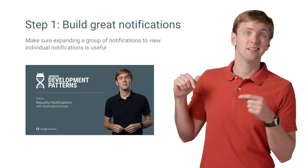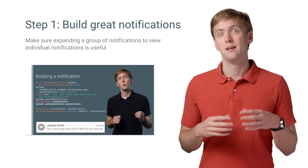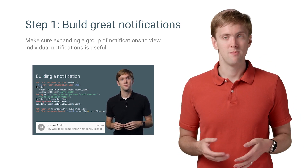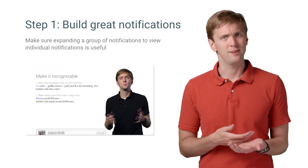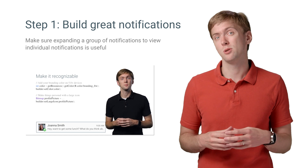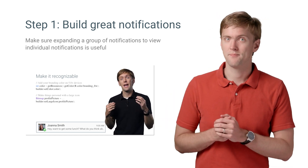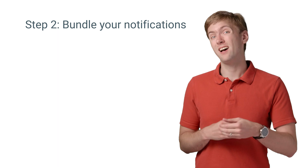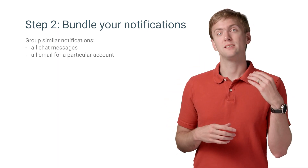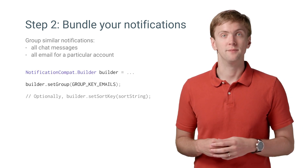I've talked about building a great notification with NotificationCompat. So let's assume you've already built great individual notifications. If users aren't getting any benefit, such as more information or actions, out of expanding individual notifications, you should work on that first. But once you have awesome individual notifications, bundling similar notifications together is done by calling setGroup for each notification.